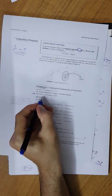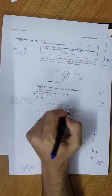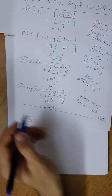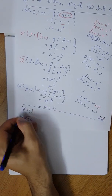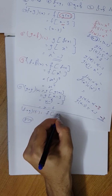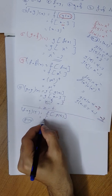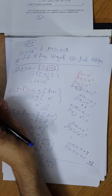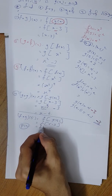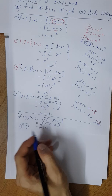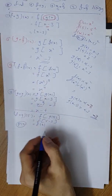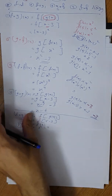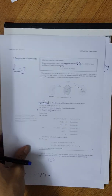For part b, find f circle g of 5. I write f circle g of 5, which equals f of g of 5. Since g of x equals x minus 3, g of 5 equals 5 minus 3, which is 2. Now I have f of 2. Since f squares the input, 2 squared equals 4. We finish Example 3 on page 75.